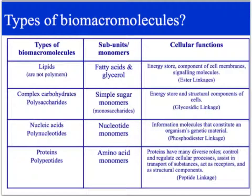These types of tables or charts turn up in exam questions quite regularly, so if you can understand the different types of biomacromolecules, their subunits or monomer, and what their function is, you're looking at picking up some really easy marks on your exam. First: lipids. A lipid is not a polymer because each monomer is not identical. They are made of fatty acids and glycerol. Their function is energy storage; they're a component of cell membranes, and they're also involved in signalling molecules. They join together through ester linkages.